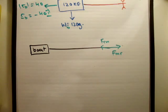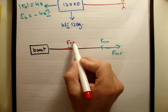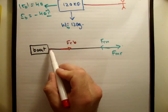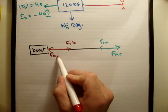What else do we have? We have the fact that the rope is touching the boat, so we have the force of the rope on the boat and we have an equal but opposite reaction, the force of the boat on the rope.